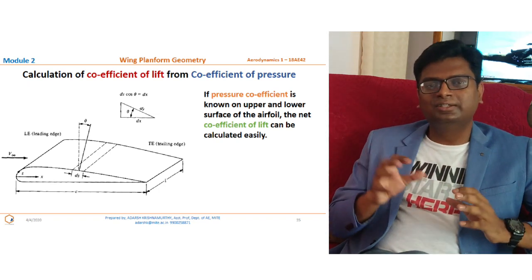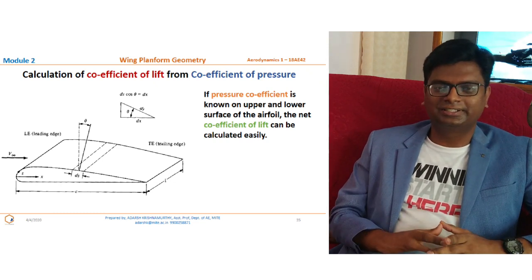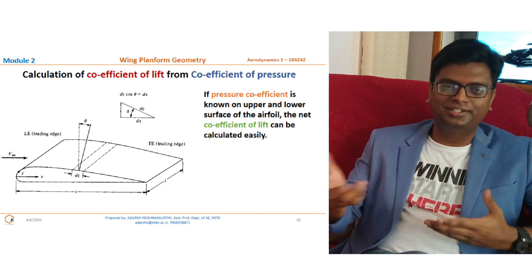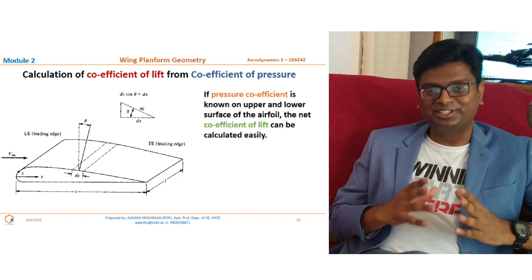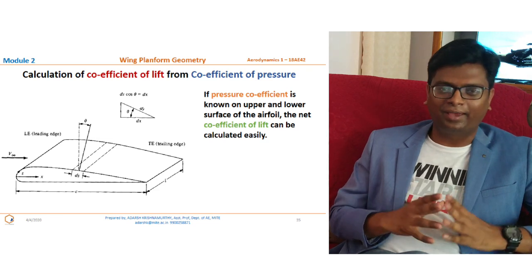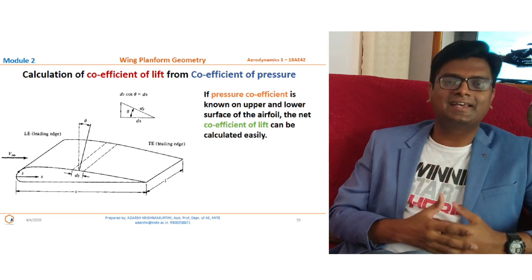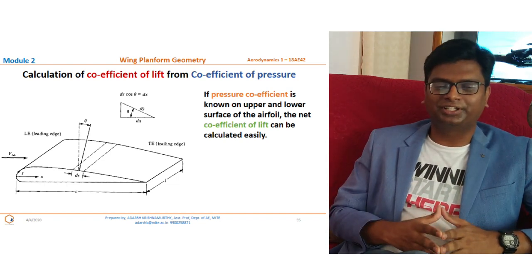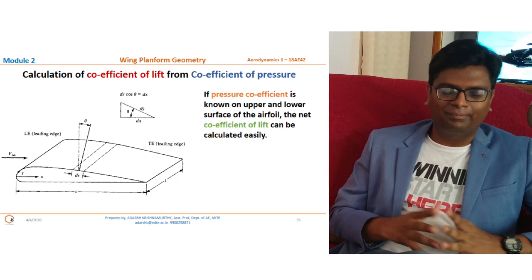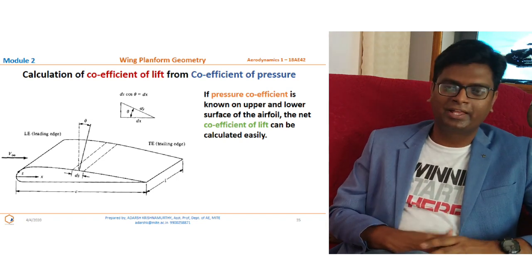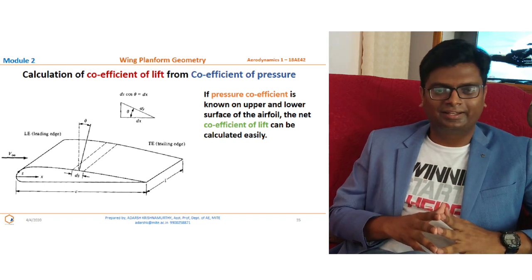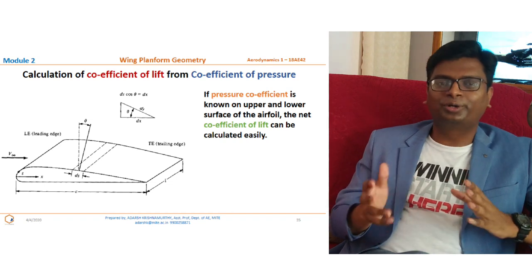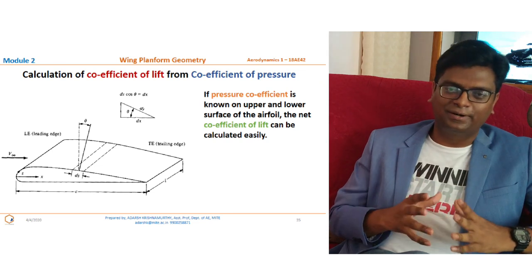Next, we discuss how to calculate the lift coefficient if we know all values of the pressure coefficient on both the upper and lower surfaces. The purpose of analyzing the pressure coefficient is to ultimately arrive at the coefficient of lift, which is very important in aerodynamic analysis. As an aerodynamicist, your aim is to get the lift coefficient as high as possible. We will see if, knowing the pressure coefficient at all points, we can obtain the lift coefficient for a given angle of attack — remember, the coefficient of lift varies with angle of attack.